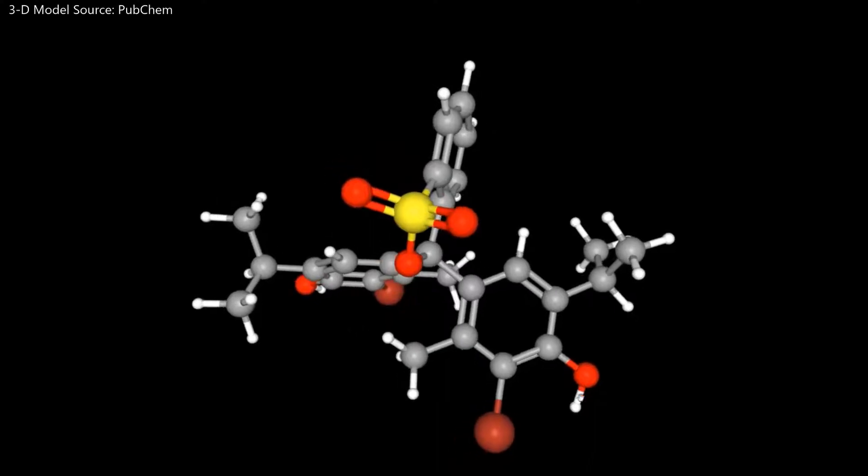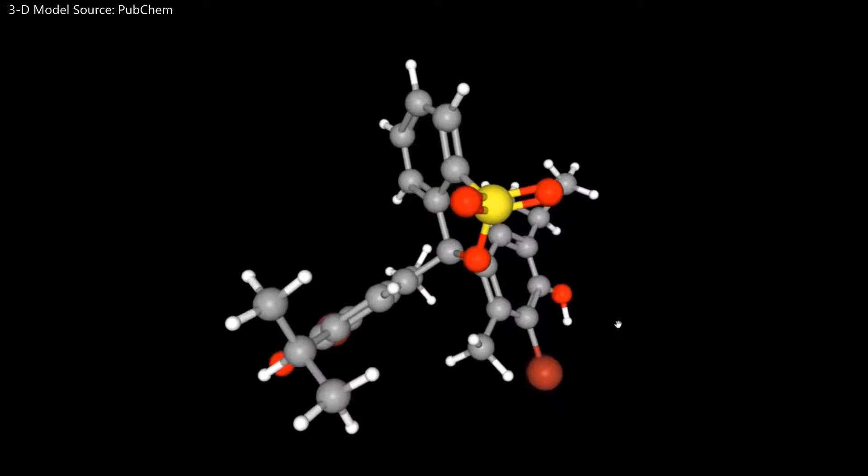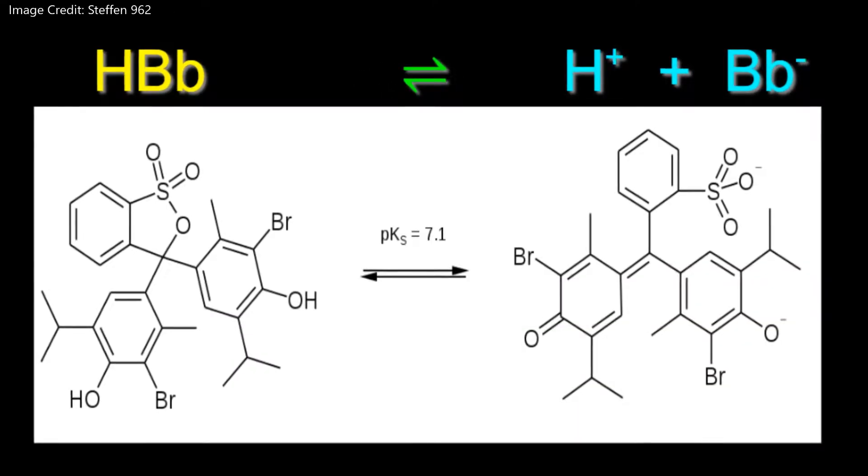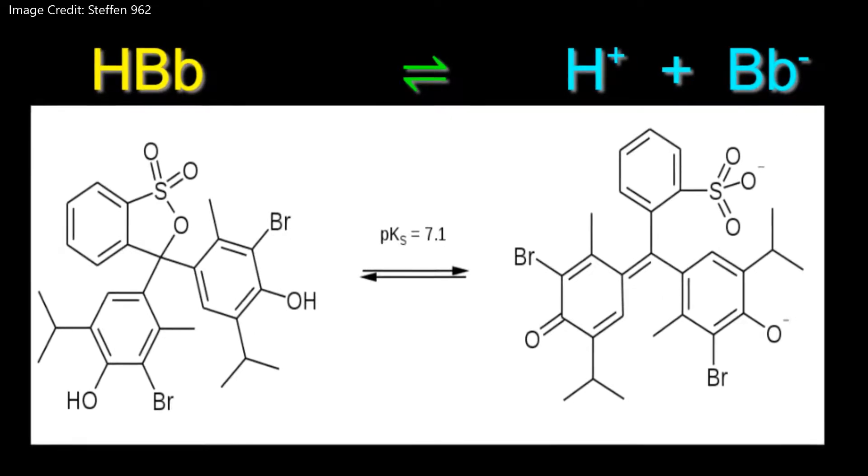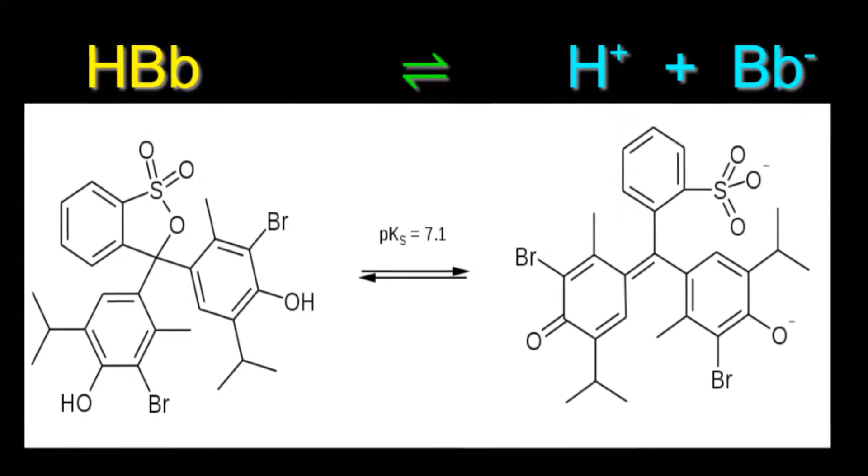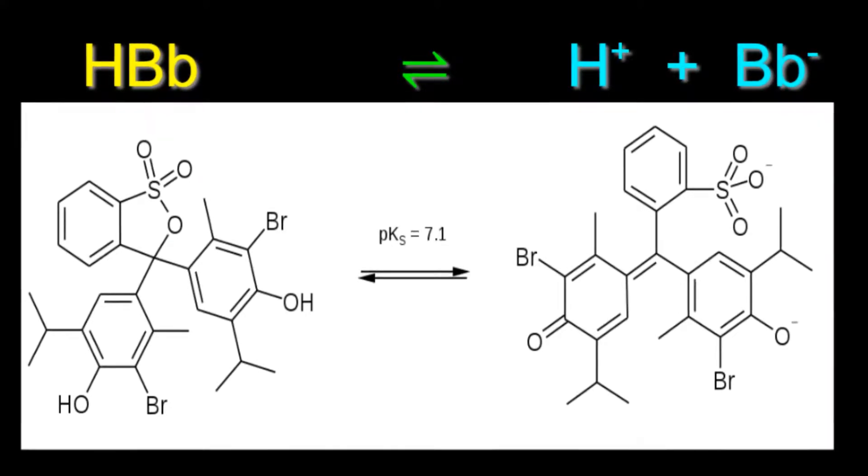Here you see a three-dimensional rendering of the bromothymol blue molecule. Solutions of bromothymol blue with an attached hydrogen ion appear yellow and turn blue with the removal of the hydrogen ion.